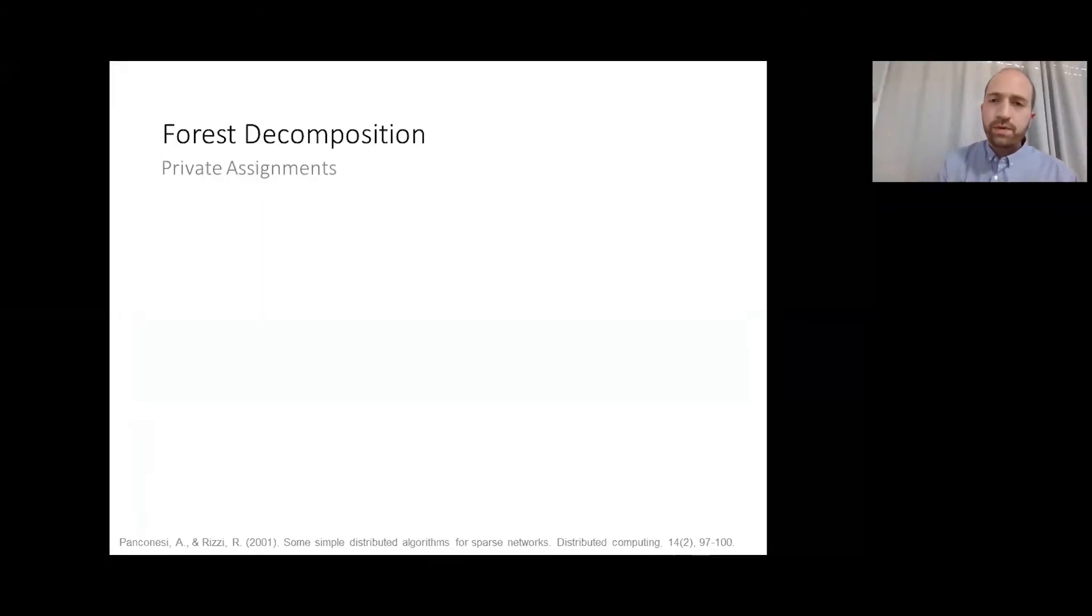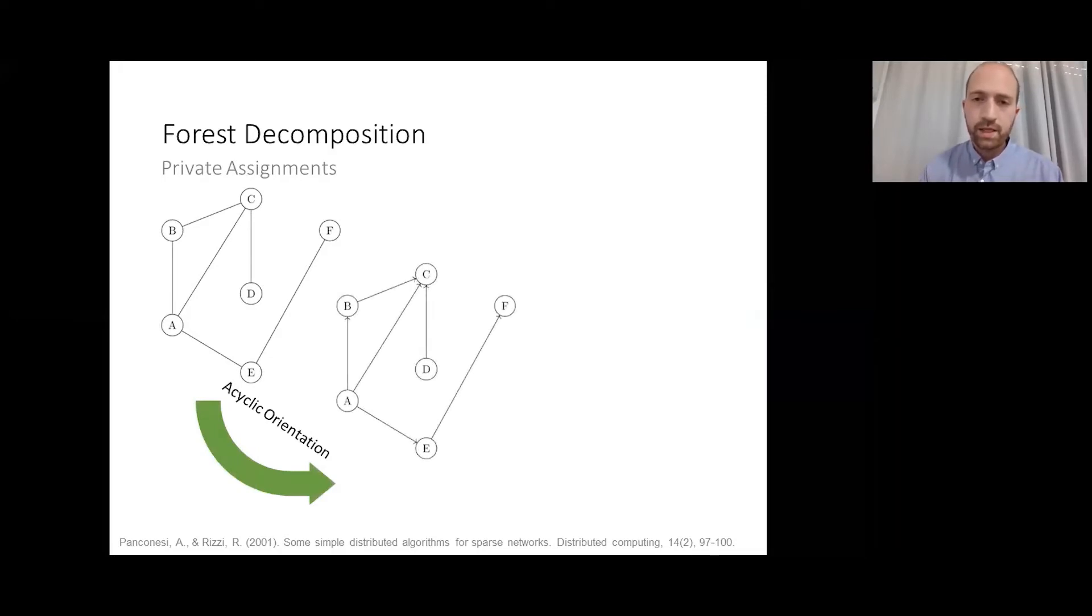Another way to get privacy preserving is by using an algorithm which does not do any communication. For instance, Panconesi and Rizzi devised an algorithm for forest decomposition by first orienting the edges in the graph in an acyclical manner, and then letting each node arbitrarily assign distinct labels to each of its outgoing edges. The label of each edge represents the forest which it belongs to. Now since in the last part of the algorithm each node does not have to communicate its actions to any other node, this critical phase of the label assignment is perfectly private.